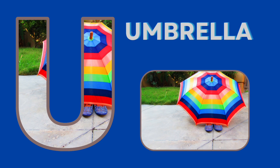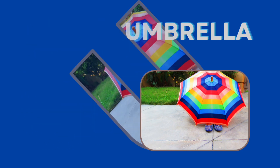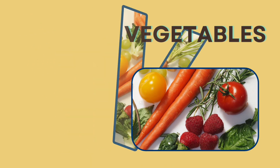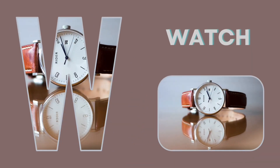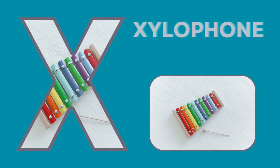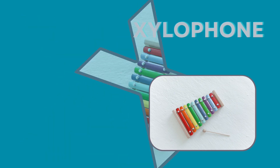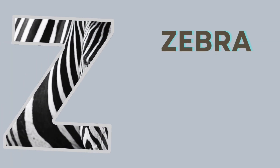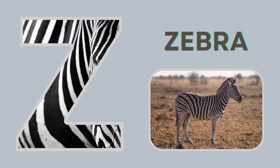U for umbrella. V for vegetable. W for watch. X for xylophone. Y for yak. Z for zebra.